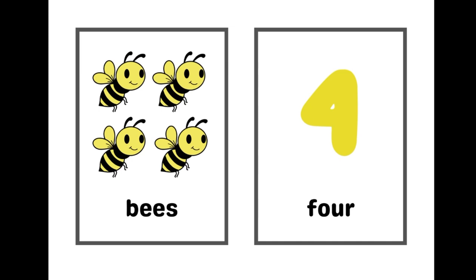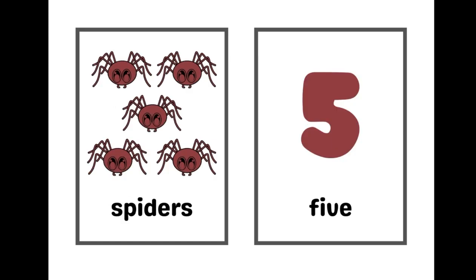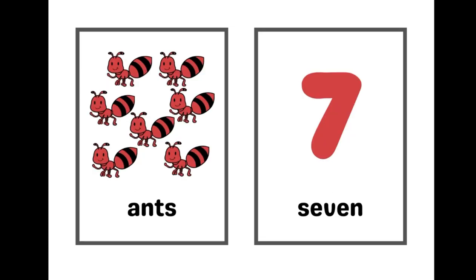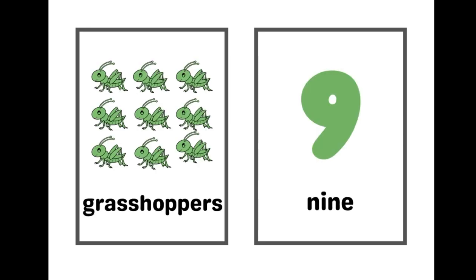4. F-O-U-R, 4 bees. 5. F-I-V-E, 5 spiders. 6. S-I-X, 6 flies. 7. S-E-V-E-N, 7 ants. 9. N-I-N-E, 9 grasshoppers.